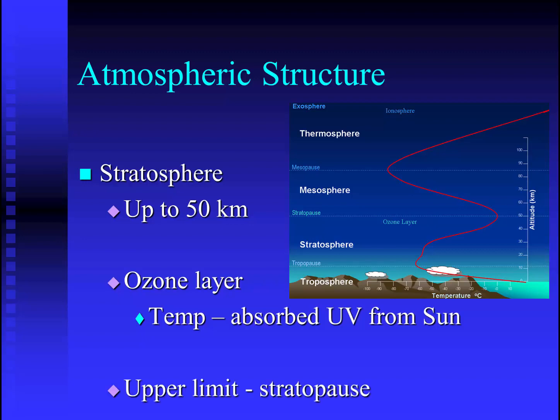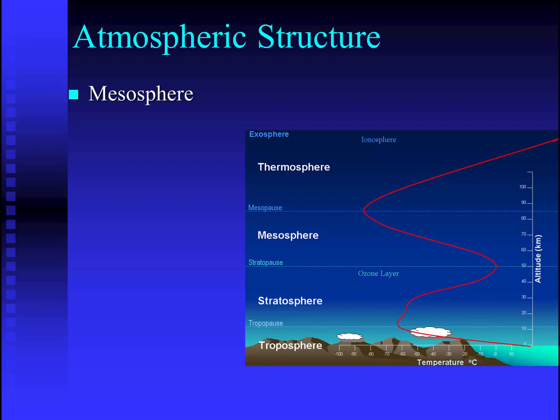The upper region of the stratosphere is known as the stratopause. Next highest, we'll see the mesosphere, extending up to about 85 kilometers. This area, known as the coldest layer of the atmosphere, may see temperatures dropping as low as minus 80 or minus 90 degrees Celsius. The upper limit of the mesosphere is the mesopause.